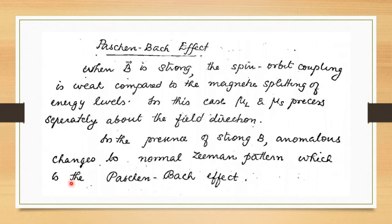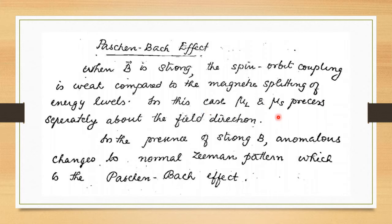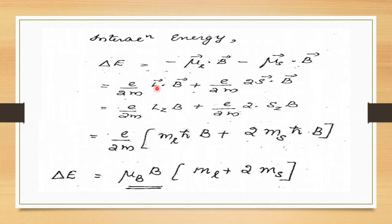In the Paschen-Back effect, the magnetic field is strong so that spin-orbit coupling is weak, and μL and μS precess separately about the field direction. In this case, the anomalous Zeeman effect changes into the normal Zeeman pattern.